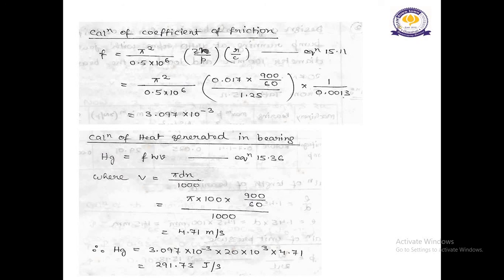We need to calculate the heat generated in bearing. Formula is HG is equal to FWV, which is taken from equation 15.36 from Design Data Handbook. V equal to pi dN divided by 1000. The value of small d is 100. The value of small N is 900 by 60. After calculation, we receive this value as 4.71 meter per second. From here, we find the value of HG, that is heat generated, it will be equal to the value of f is 3.097 into 10 to the power minus 3. W is 20 into 10 to the power 3. And, the value of V we have calculated as 4.71. After calculation, we have received the value of heat generated as 291.73 Joule per second.